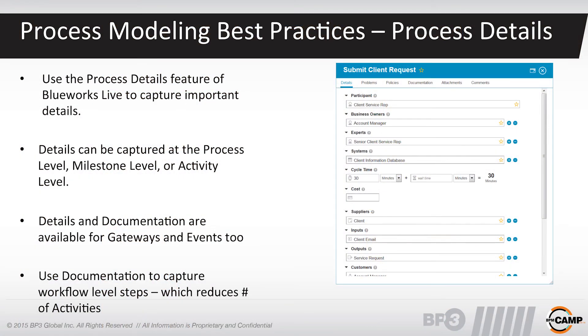A habit we sometimes see is stringing multiple gateways together — for example, in a loan application, a gateway for credit risk leads to another for age, creating a long chain. Instead, precede that gateway with an activity where you embed all the decision logic and rules. Another important feature of BlueWorks Live — what sets it apart from flat diagram tools like Visio — is the ability to add process details. Double-clicking any event opens a screen to input details: the system being used, cycle time, problems, risks, and all the SIPOC data. Your process model isn't complete until you've entered those process details. The documentation field is also a great place to list out almost like a user manual for how to do a particular activity.